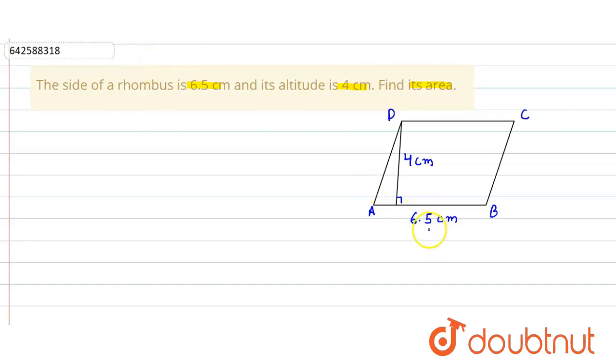So here the side of the rhombus is equal to 6.5 cm and here the altitude is given to be 4 cm. So the side of the rhombus is 6.5 cm and the altitude of the rhombus is equal to 4 cm.